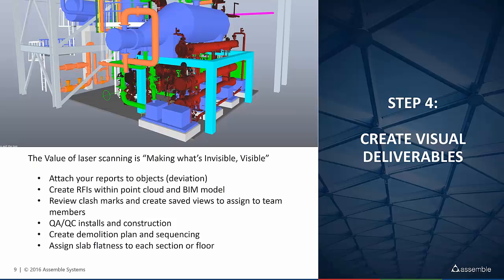You can create an RFI with the point cloud and BIM model directly. If there is a problem with clashes, installs, or a concrete pour, you can right there create an RFI and share it with the design team, subcontractors, or crew members. QA/QC of installs is another type of visual data you can now have with point cloud and BIM together. All of these create visual reports that enable project managers, owners, and field engineers to do their jobs much better than before.